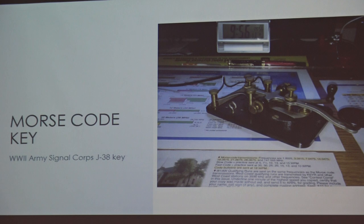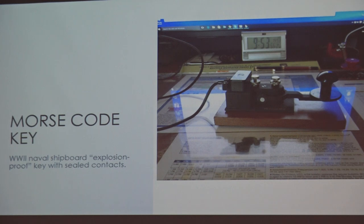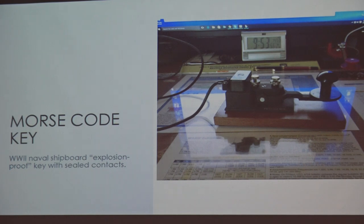That's what you send Morse code on — it's called a Morse code key. That particular one is a World War II J38 straight key, and when we go over to my go-station, you'll see that's the one hooked up to my radio — the one I normally use when I do CW. Now, that's an Army one. We don't want to leave out the Navy. The Navy has a Morse code key too — that's a World War II shipboard key called explosion proof, because it was designed to be used on a warship where you might have fuel fumes. The switch contacts are all enclosed inside the body of the key so they cannot ignite any fuel vapors.